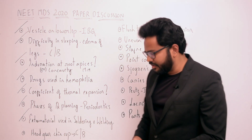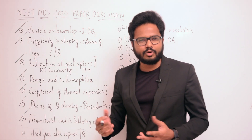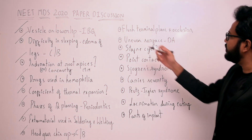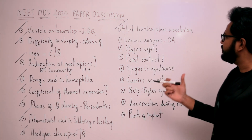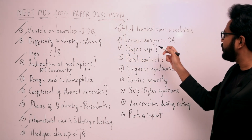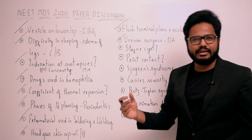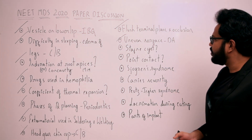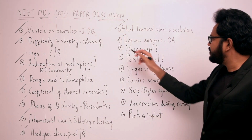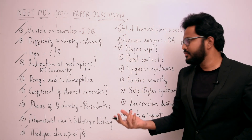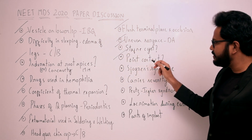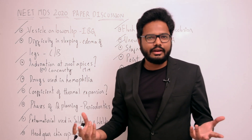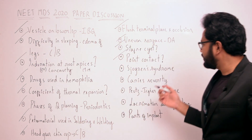Headgear, chin cup — a case-based question pertaining to orthodontic treatment. Review it once. Also, flush terminal plane and occlusion — those are the keywords. From dental anatomy, I've been seeing the keyword 'uneven surface' several times; I'm not exactly sure what the question is, so do let me know. Staphylocyst — was it asked? Check it out once. Point contact and surface contact — these keywords I've seen many times. Let me know what the question is if you remember.